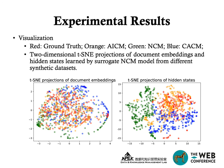Furthermore, we visualize the t-SNE projections of document embeddings and GRU hidden states learned by the surrogate NCM from synthetic datasets generated by different click models. Both projections based on AICM's synthetic dataset are closer to the real data compared to NCM and CSCM.